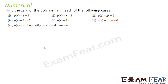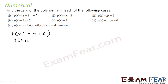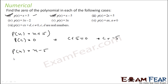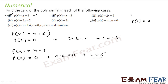Let's take a few more numericals — find the zeros for polynomials in each case. For p(x) = x plus 5: set x=c, c plus 5 equals 0, so c equals minus 5 is the zero. For p(x) = x minus 5: c minus 5 equals 0, so c equals 5 is the zero. For p(x) = ax (a not equal to 0): p(0) equals a times 0 equals 0, so 0 is the zero.